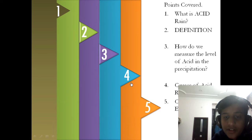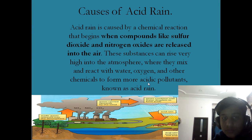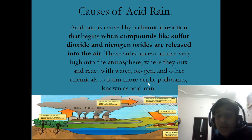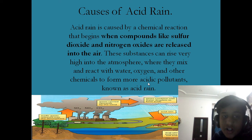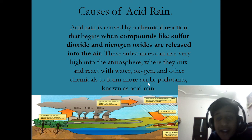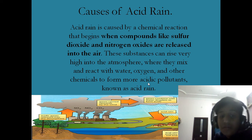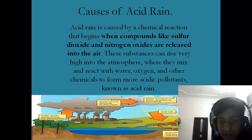Causes of acid rain: Acid rain is caused by a chemical reaction that begins when compounds like sulfur dioxide and nitrogen oxides are released into the air. These substances can rise very high into the atmosphere where they mix and react with water, oxygen and other chemicals to form more acidic pollutants known as acid rain.